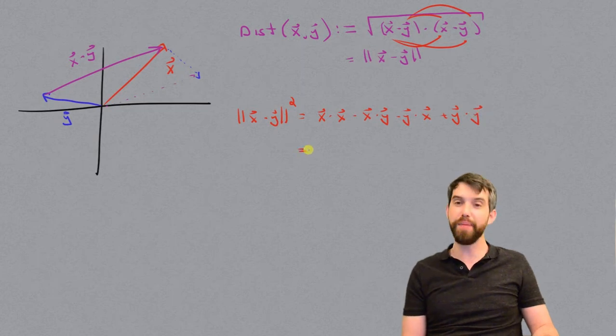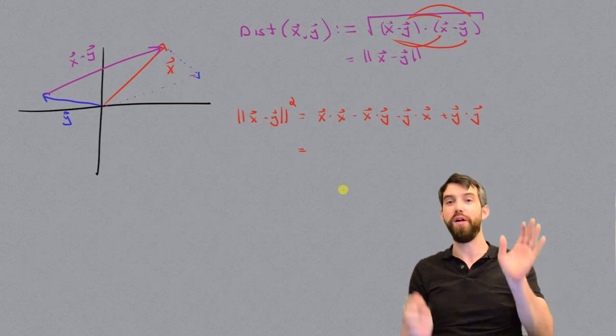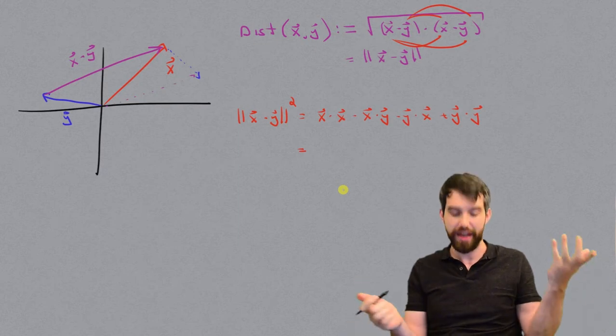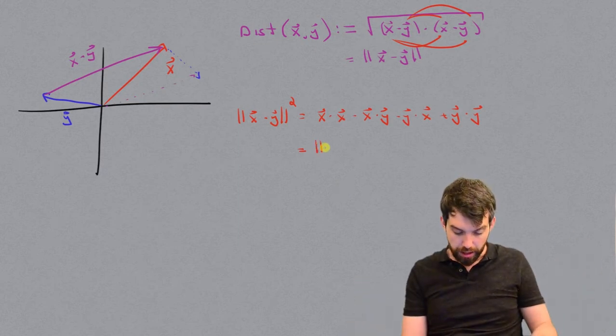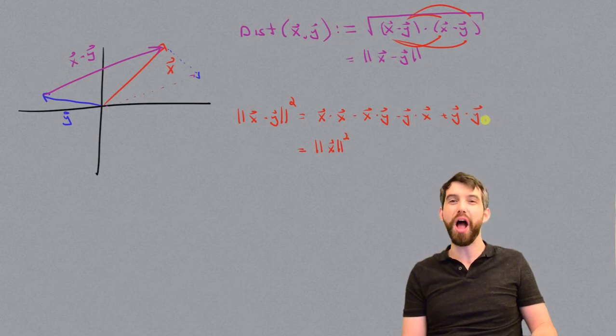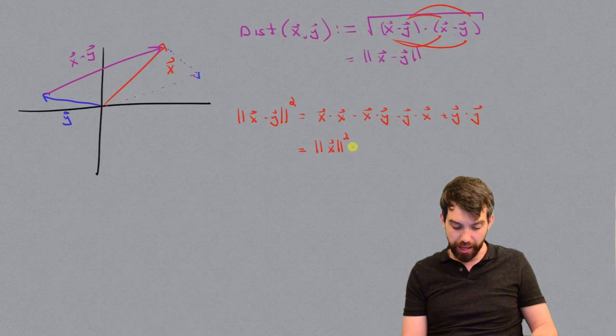Then I'm going to identify a few different components. First of all, x dot x. This is just the same thing as length of x squared by our definition. So I have a length of x squared. And then I'm going to do the same thing here to y dot y. This is the same thing as the length of y squared.